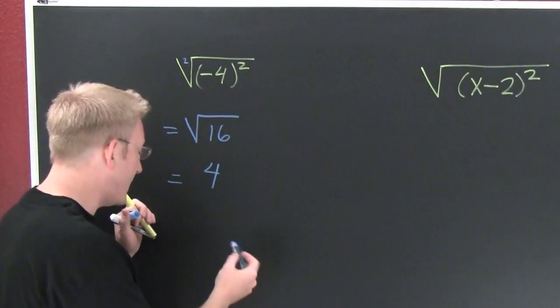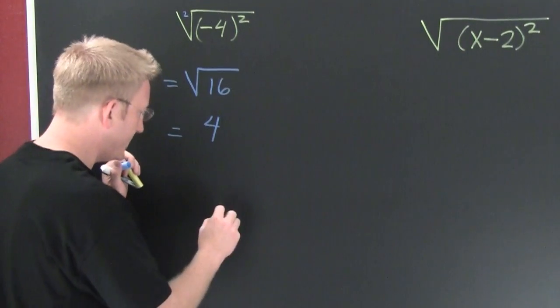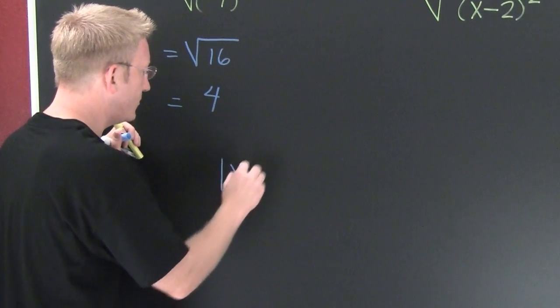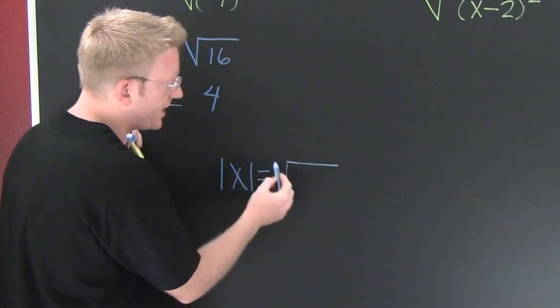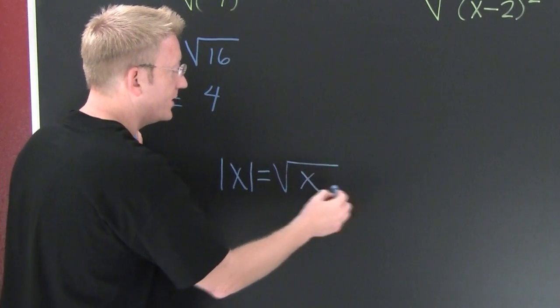And one definition that follows with that is the absolute value of x. The absolute value of x can be defined as the square root of something squared.